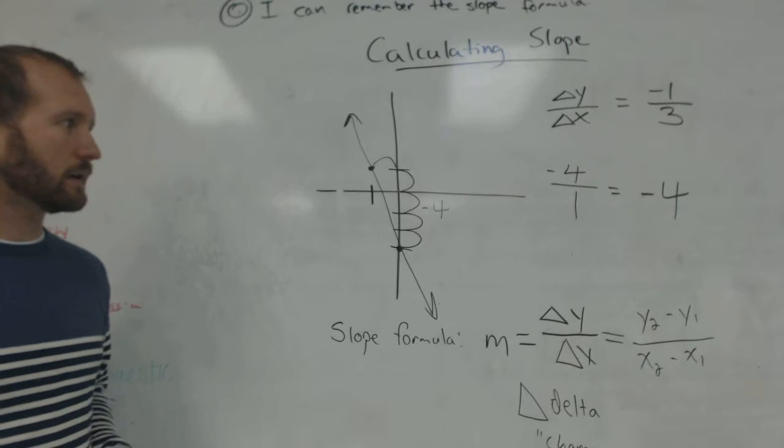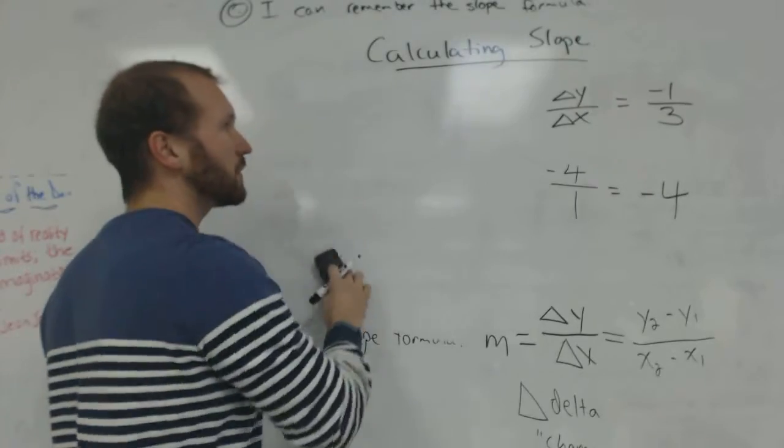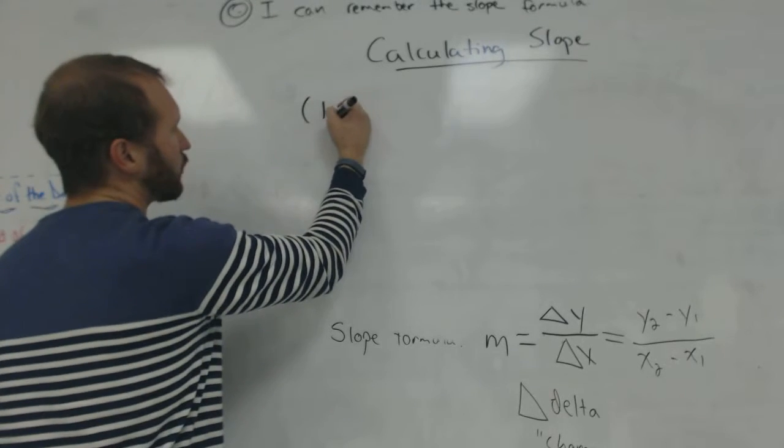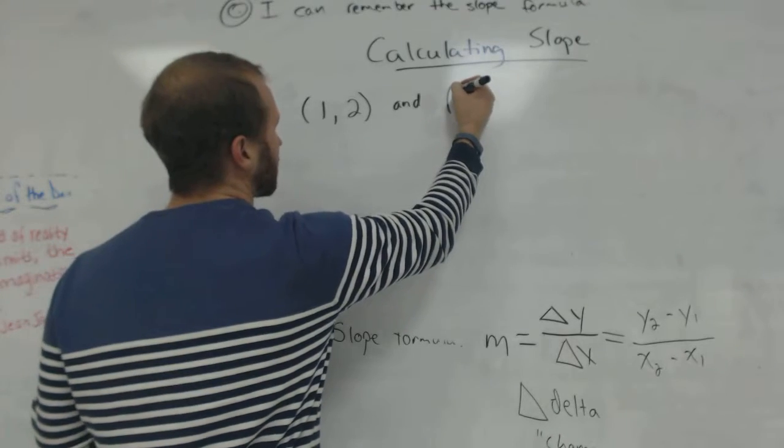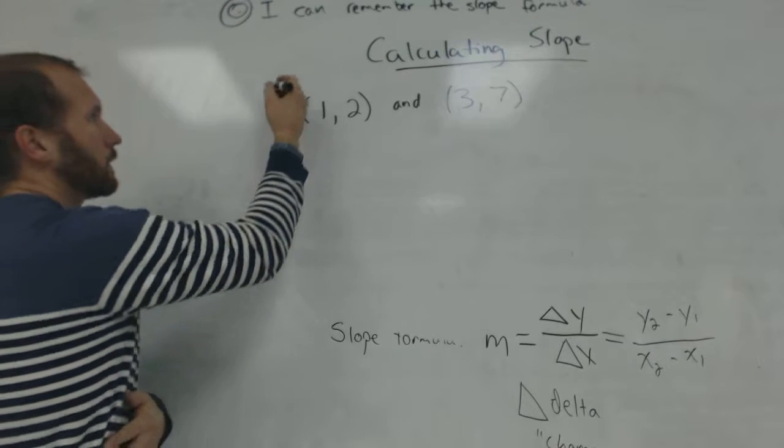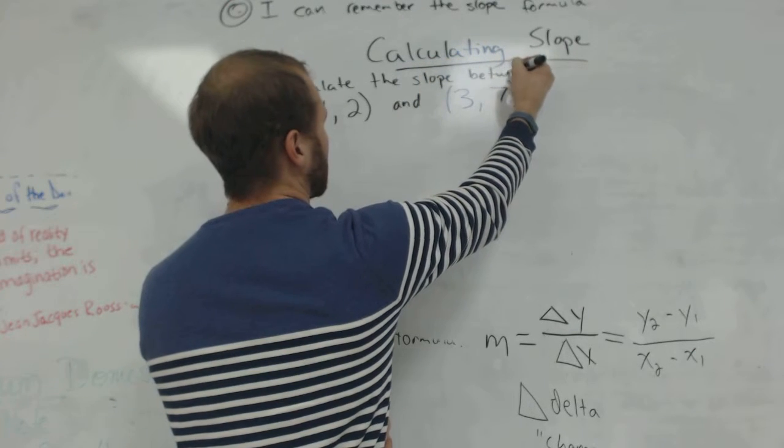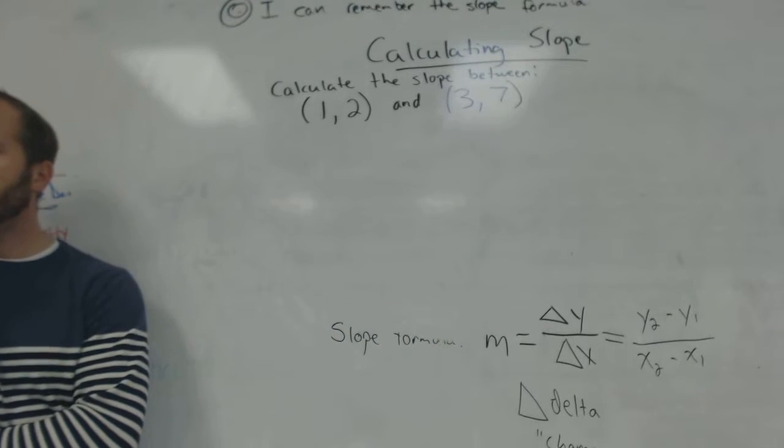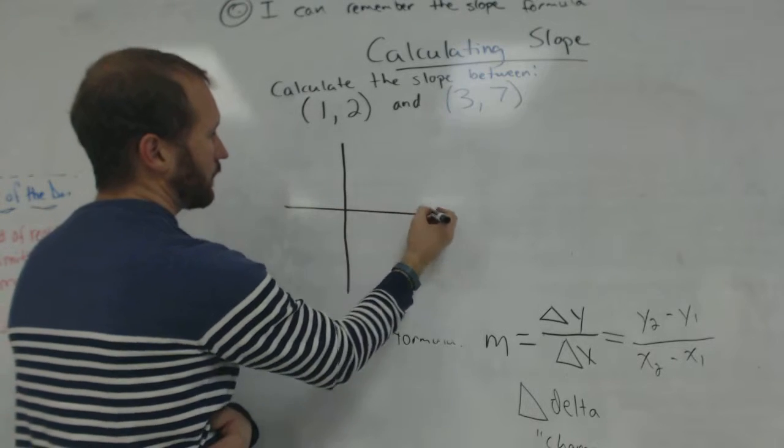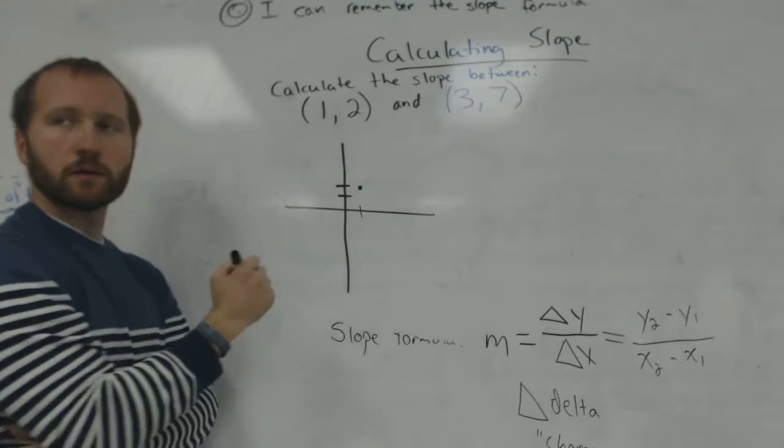What if, instead of giving you a graph... What if, instead of giving you a graph, I just named the points? What if I said, what is the slope between the point 1, 2 and 3, 7? Calculate the slope between these two points. Let's take a look at this on a graph. Where is 1, 2 on a graph? Well, we go over 1, up 2, and we put a point. This is the point 1, 2. Right there.